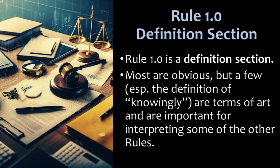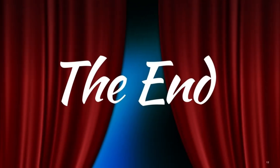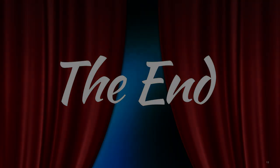The first section, like in many codes, is a definition section — 1.0. I don't teach this in my course, but we will refer back to it a few times. Most of these are pretty obvious, but a few, like the definition of knowingly, are terms of art and are important for interpreting some of the other rules. And that concludes our quick introduction to the ABA Model Rules of Professional Conduct.